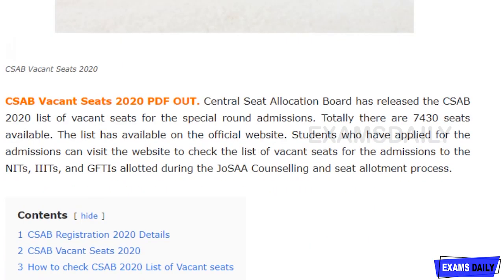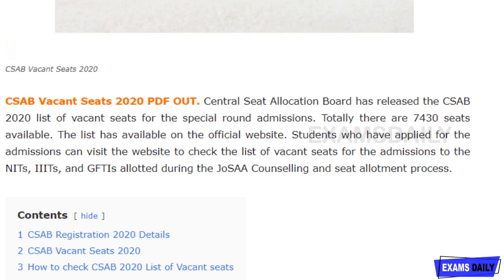Central Seat Allocation Board has released the 2020 list of vacancy for the special round admissions. Totally, there are 7430 seats available for this and this list is available on their official website. Those who have applied for admissions can visit the official website and check the list of vacancy for admissions to the NITs, IITs, and GFTIs allotted during the JO-SSA counselling and seat allotment process.